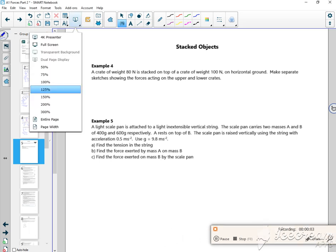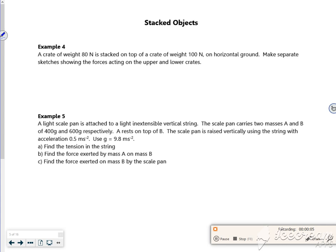Right then, so we've got some stacked stuff now. It says a crate of weight 80 newtons is stacked on top of a crate of weight 100 newtons. Make separate sketches showing the forces acting on the upper and lower crates.